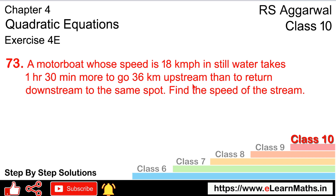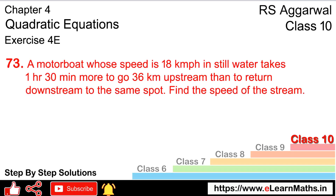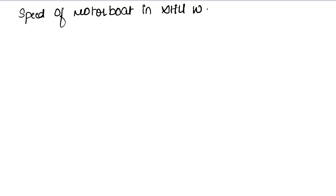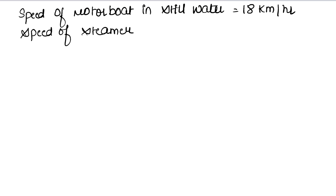We have to find the speed of the steamer. First of all, the motor boat speed in still water is 18 km per hour. We have not been given the speed of the steamer, so we let the speed of the steamer be x km per hour.